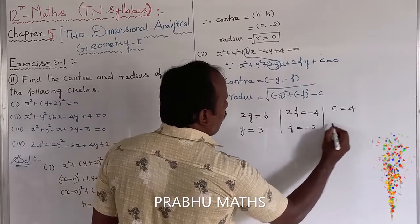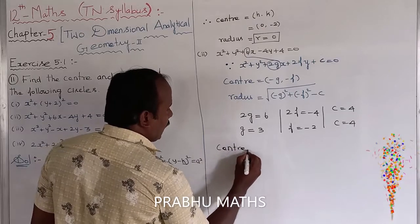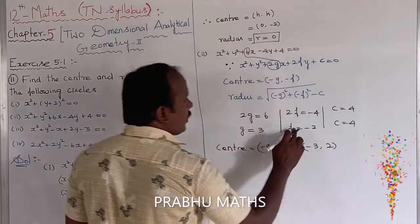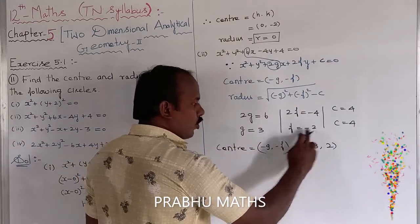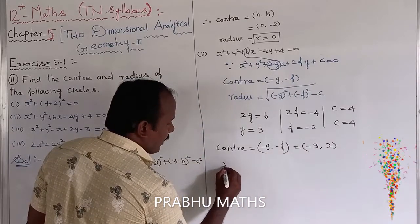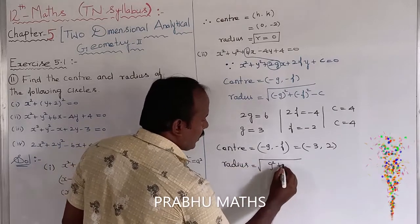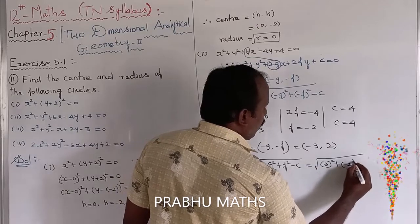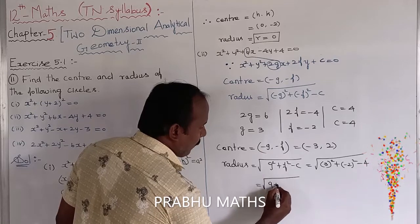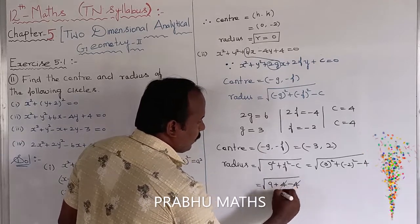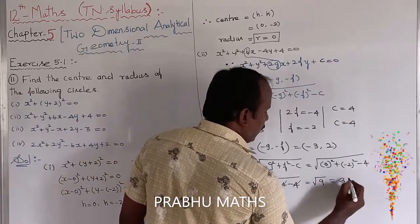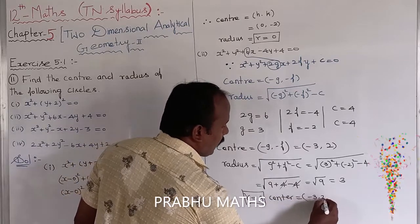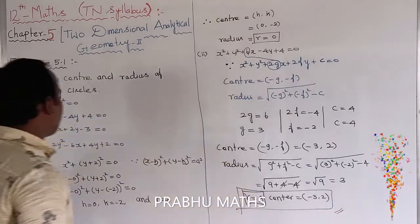Center equals (minus g, minus f) equals (minus 3, plus 2), since minus f equals minus(minus 2) equals plus 2. Radius equals the square root of g² + f² minus c, equals the square root of 3² + (minus 2)² minus 4, equals the square root of 9 + 4 minus 4, equals the square root of 9, equals 3. So r = 3, center = (minus 3, 2). The second subdivision is now complete.